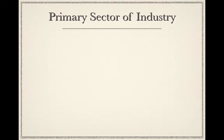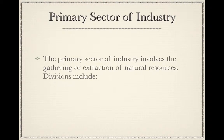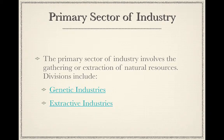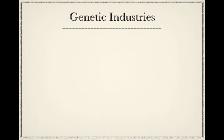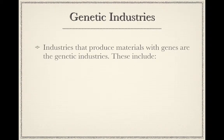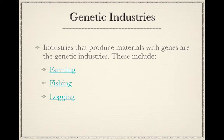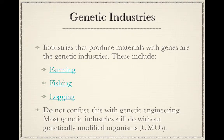The primary sector of industry involves the gathering or extraction of natural resources. Divisions include genetic industries and extractive industries. Genetic industries produce materials using organisms and include farming, fishing, and logging. Do not confuse this with genetic engineering — most genetic industries still do without genetically modified organisms, or GMOs, although they are increasingly common.